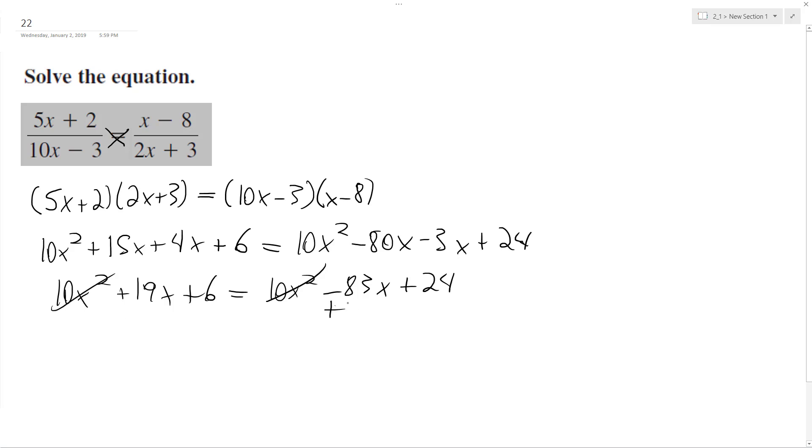And then plus 83x plus 83x, and then get all the x's on one side and the constants on the other, so 83x ends up being 102x is equal to 18.